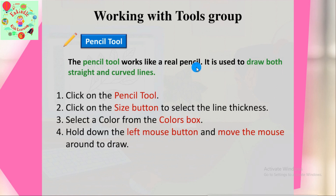Now we'll see how to use the pencil tool step by step. First, click on the pencil tool. Then click on the size button to select the line thickness. Select a color from the colors box. Hold down the left mouse button and move the mouse around to draw.